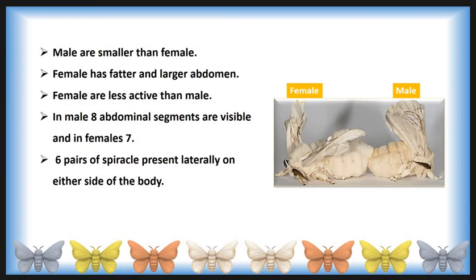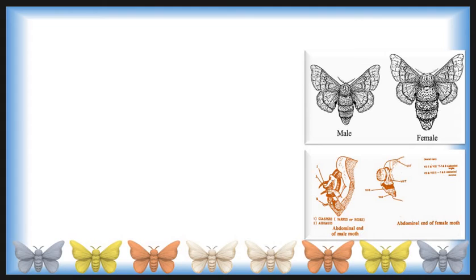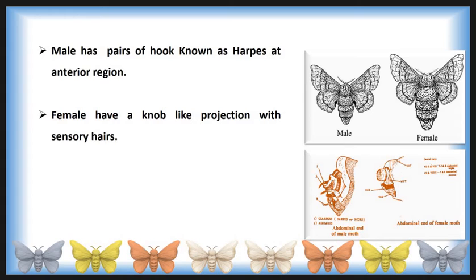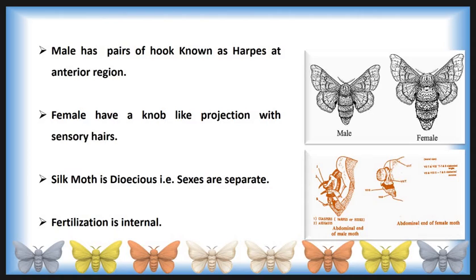In the silk moth, six pairs of spiracles are present laterally on either side of the body. Spiracles are lateral openings used for respiration. The entire body of the silk moth is covered by scales, like a butterfly. The male has a pair of hooks known as valves present at the anterior region. In the female, there is a knob-like projection with sensory hair at the anterior region. Fertilization in the silk moth is internal.